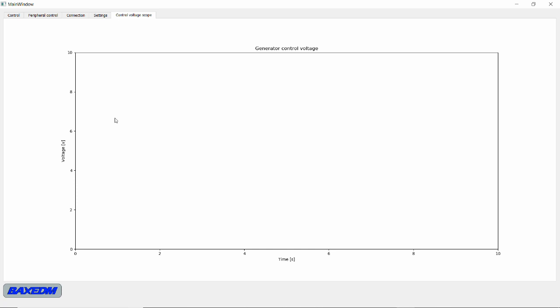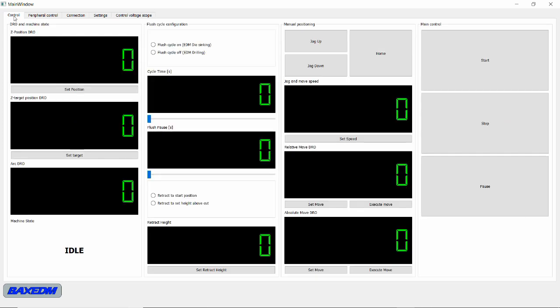The first tab consists of four sections. The first is a DRO of the position and of the machine state. Here you can see the actual position. This will hold the target position, so the depth. And on this DRO you can see what the actual arc control voltage is, and here you can see the state of the machine.